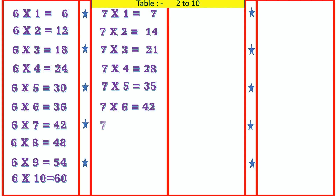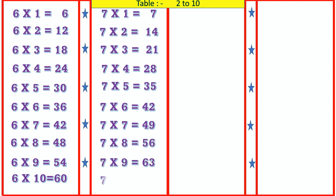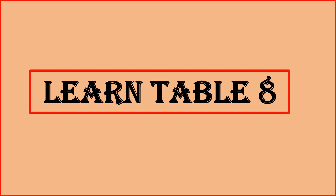7 7's are 49, 7 8's are 56, 7 9's are 63, 7 10's are 70. Learn table 8.